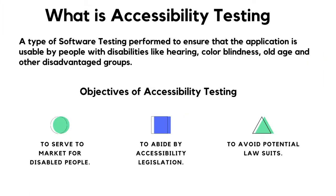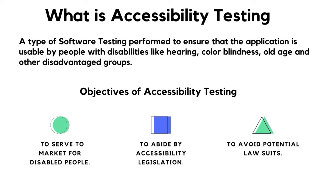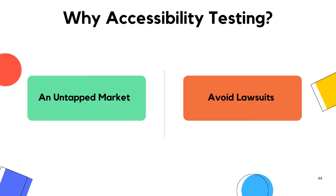Accessibility testing is defined as a type of software testing performed to ensure that the application being tested is usable by people with disabilities — disabilities like hearing impairment, color blindness, old age, and other disadvantaged groups. It is a subset of usability testing. The objective of accessibility testing is to serve the market for disabled people, to abide by accessibility legislation, and to avoid potential lawsuits.